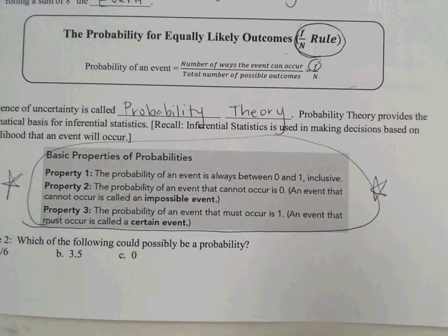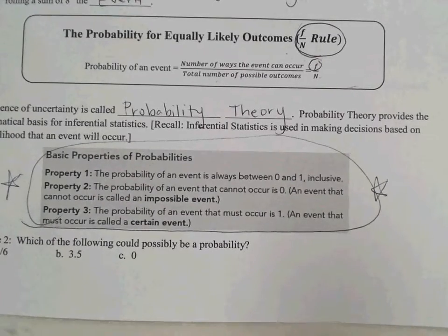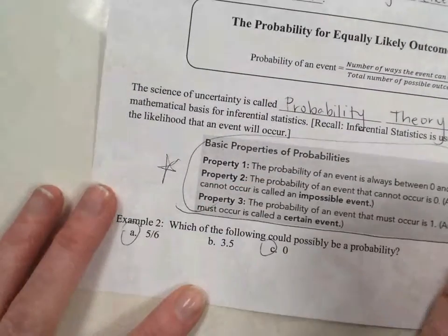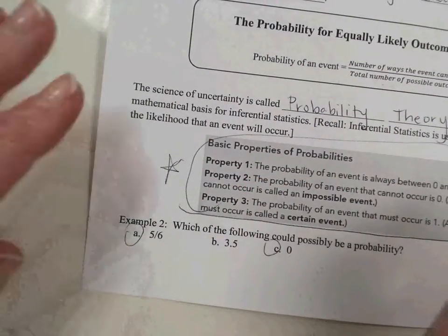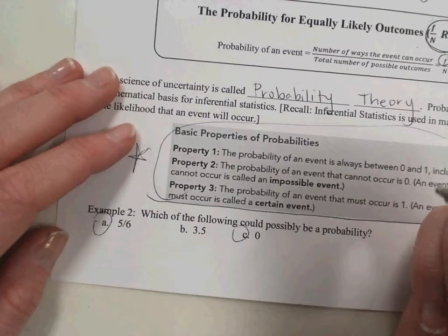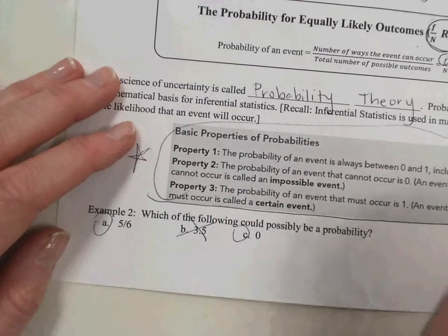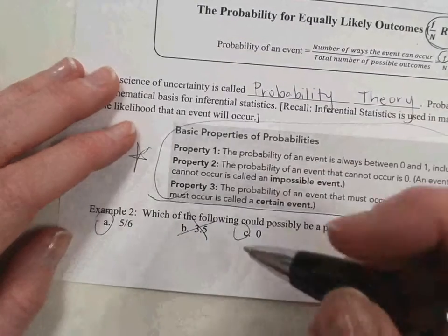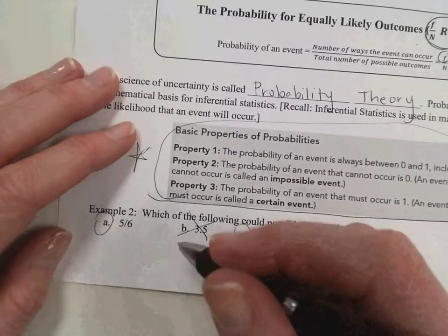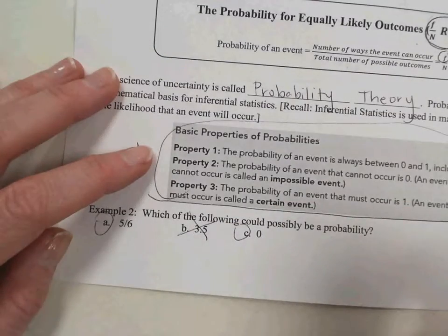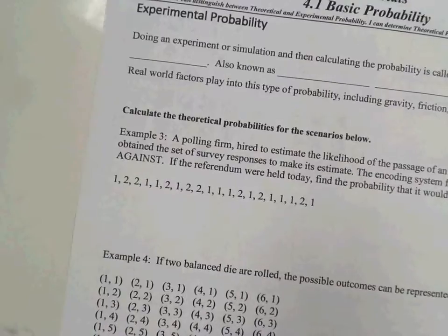Example 2, which of the following could possibly be a probability? Circle the ones that could possibly be probabilities. C is one of them. A is, as long as the numerator is smaller than the denominator. What about B? Can B be a probability, 3.5? No. Because it cannot have a probability greater than 1. If I wrote this as a percent, that would be 350%. We can't have that.